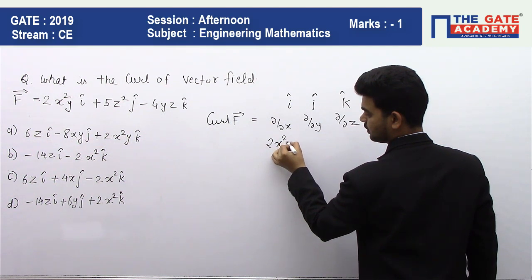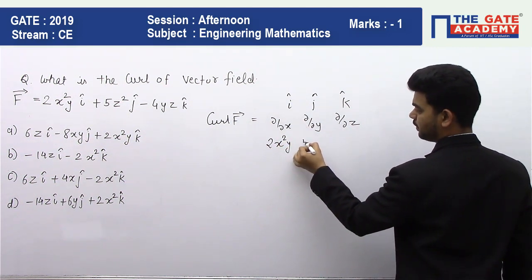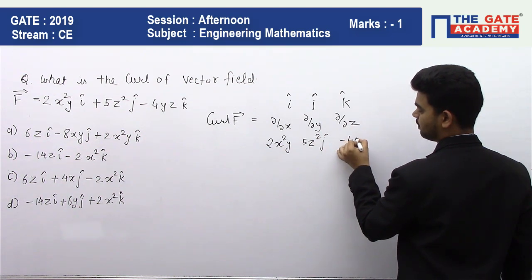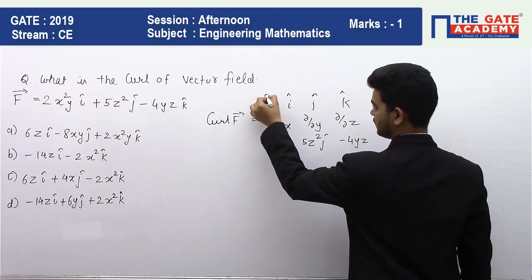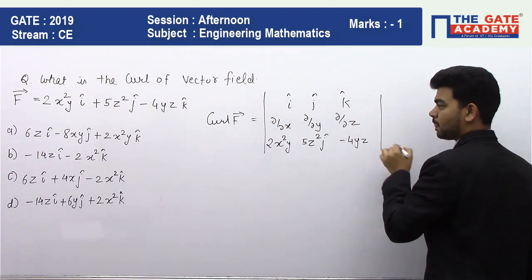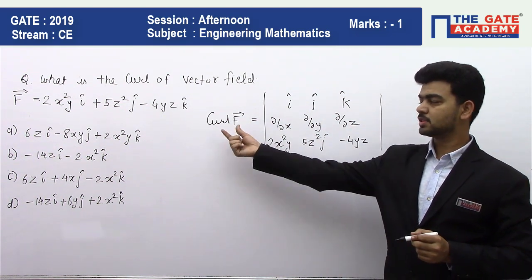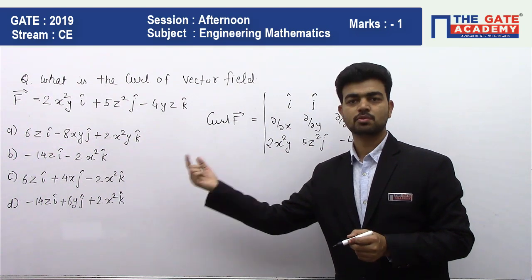The y component is 5z² and z component is -4yz. We will solve this matrix and we will get one vector which is curl of f, and we will see which option is correct. It is a very easy question.